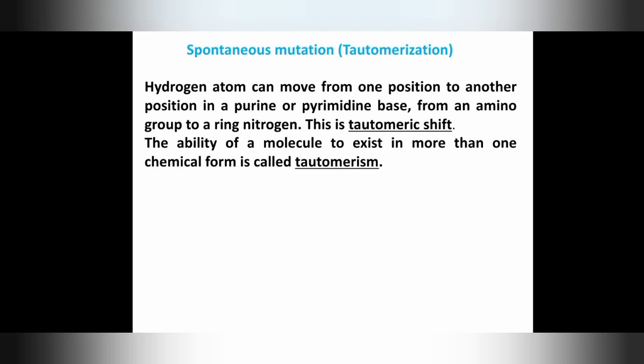The nitrogenous bases — purines and pyrimidines: adenine, guanine, thymine, cytosine, or uracil — have an ability to exist in more than one chemical form. That ability is known as tautomerism, and the property of shifting between forms is the tautomeric shift.